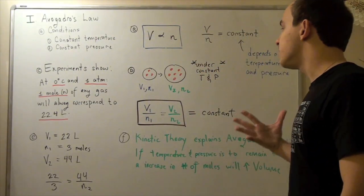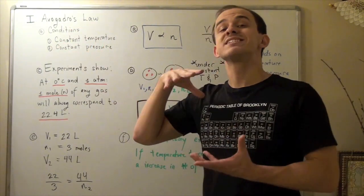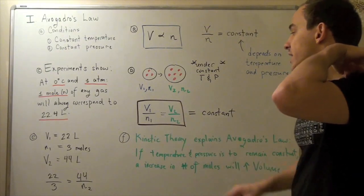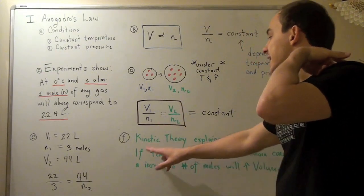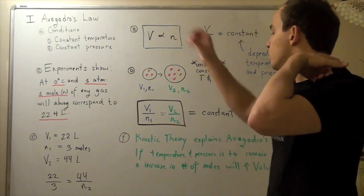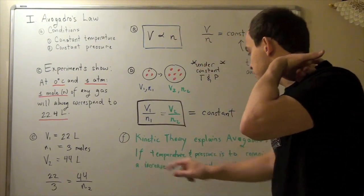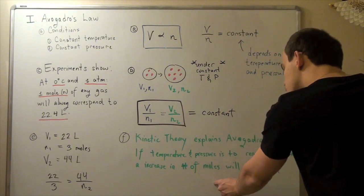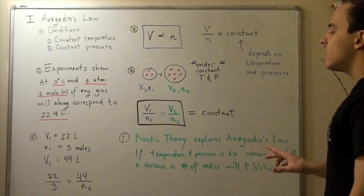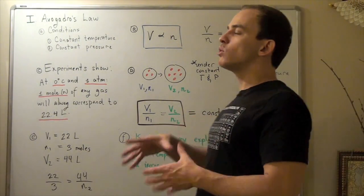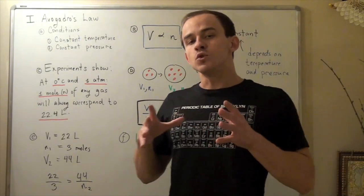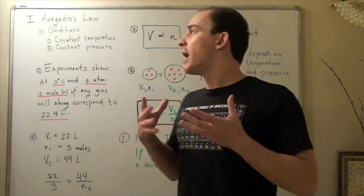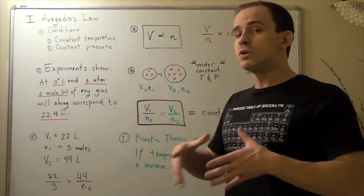So now let's explain Avogadro's law, a macroscale concept using a microscale concept or the kinetic theory or the kinetic molecular theory. Now kinetic theory explains Avogadro's law in the following way. If temperature and pressure is to remain constant, an increase in the number of moles will increase volume. In other words, if our kinetic energy or average kinetic energy of our molecules is to remain the same and the pressure or the force per unit area exerted by or on the walls of my container is to remain the same.